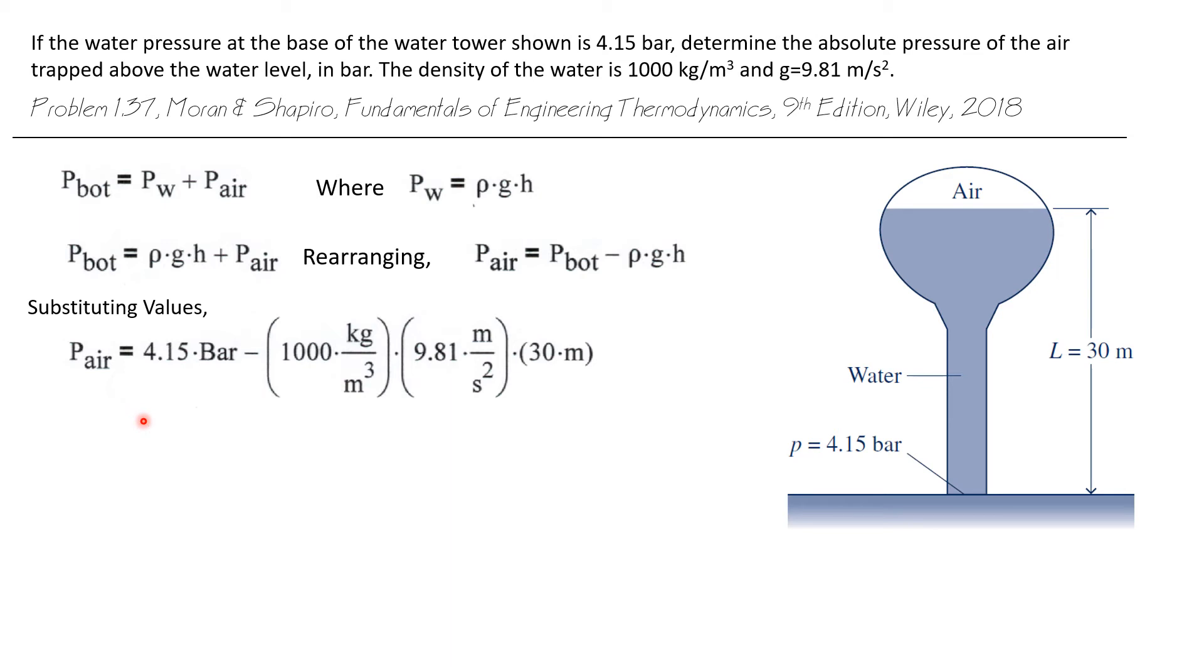We can substitute values. The pressure at the bottom is 4.15 bar. Now we'll subtract the product of rho g h. Rho is 1000 kilograms per cubic meter, acceleration of gravity is 9.81 meters per second squared, and the height of the column of water is 30 meters.